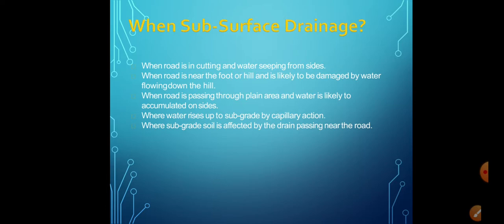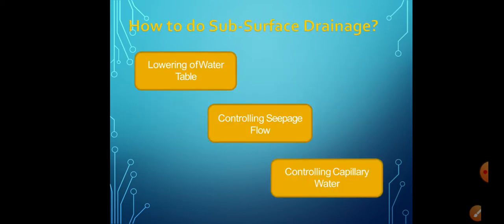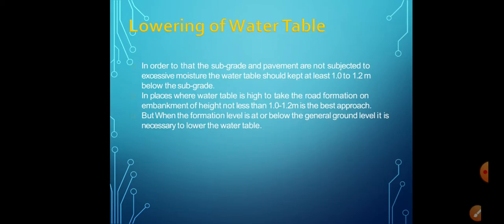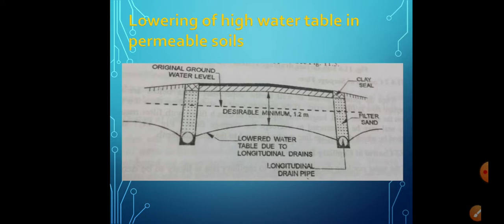In subsurface drainage of highways, it is attempted to keep variations of moisture in the subgrade as minimum as possible. Only gravitational water can be drained by usual drainage systems. Subsurface drainage is used when: the road is in cutting and water seeps from the sides; the road is near the foot of a hill and likely to be damaged by water flowing down; the road passes through a plain area and water is likely to accumulate on the sides; water rises up to the subgrade by capillary action; or the subgrade soil is affected by drainage passing near the road.